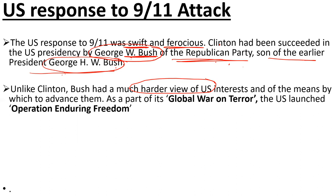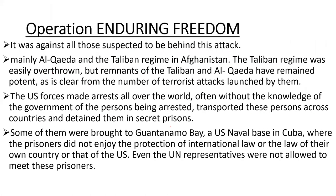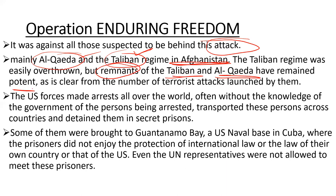As part of the global war on terror, the US launched Operation Enduring Freedom. This was against all those suspected to be behind the 9/11 attack — mainly the Al-Qaeda group and the Taliban regime in Afghanistan. The Taliban regime was easily overthrown, but the remnants of the Taliban and Al-Qaeda remained potent and were always attacking, as is clear from the number of terrorist attacks launched by them.